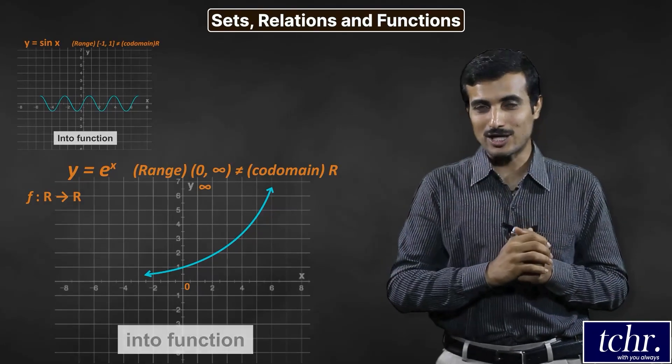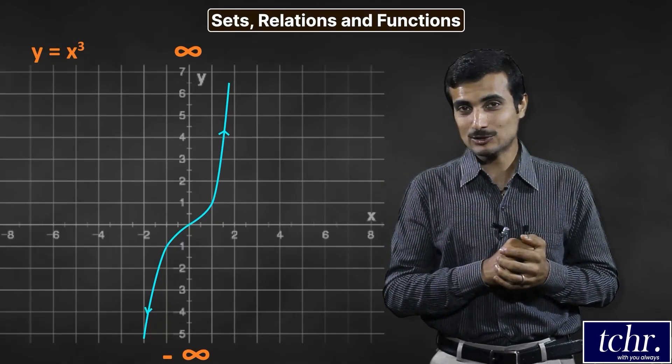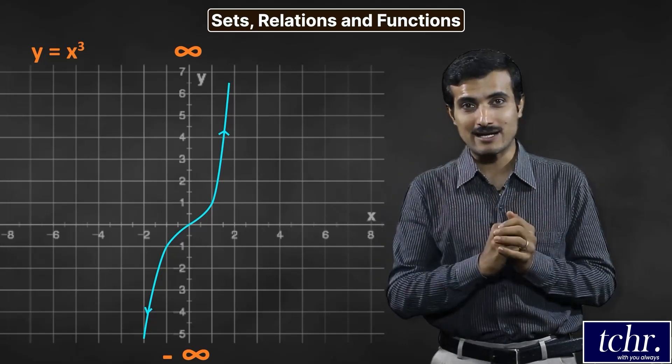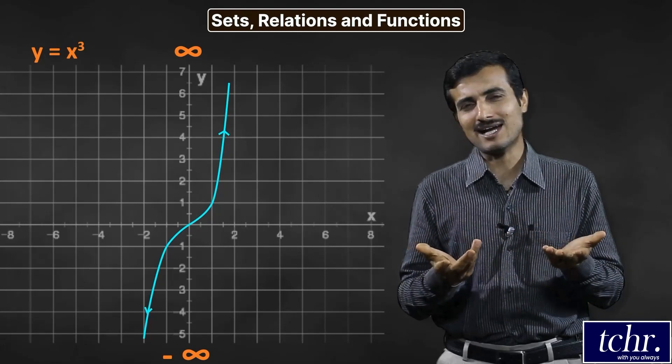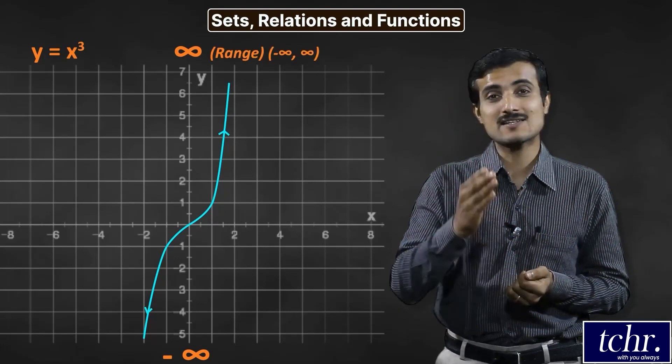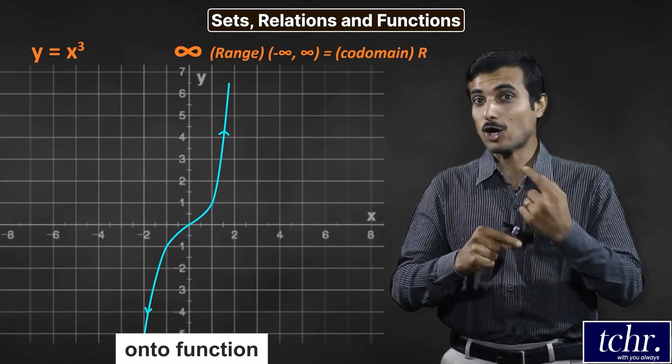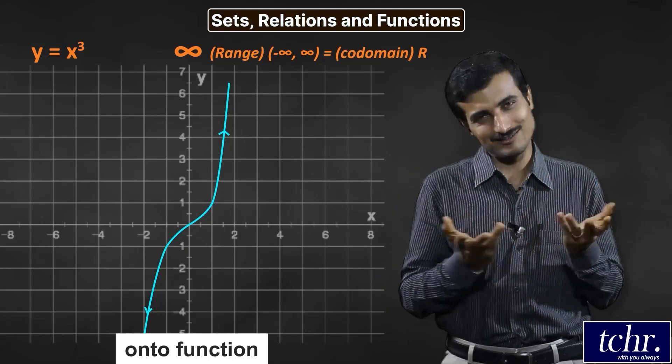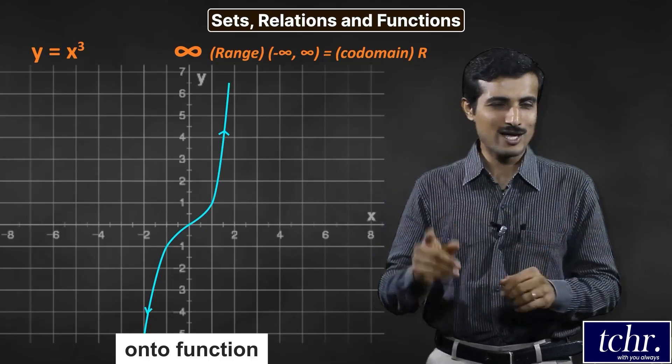Y equals x cube. This is minus infinity to plus infinity. The y value - it's any real number. So the range is equal to co-domain R. Therefore this function is onto function. If you look at the graph, you'll know whether it's onto or into, whether it's many-one or one-one. An amazing shortcut.